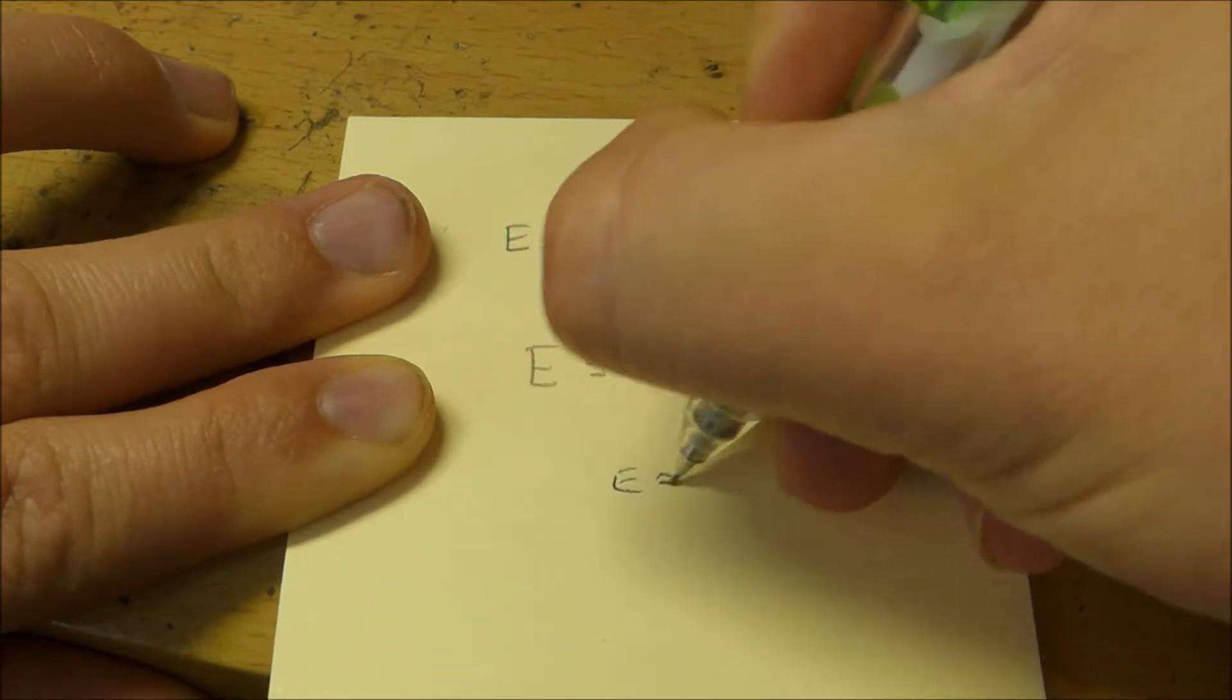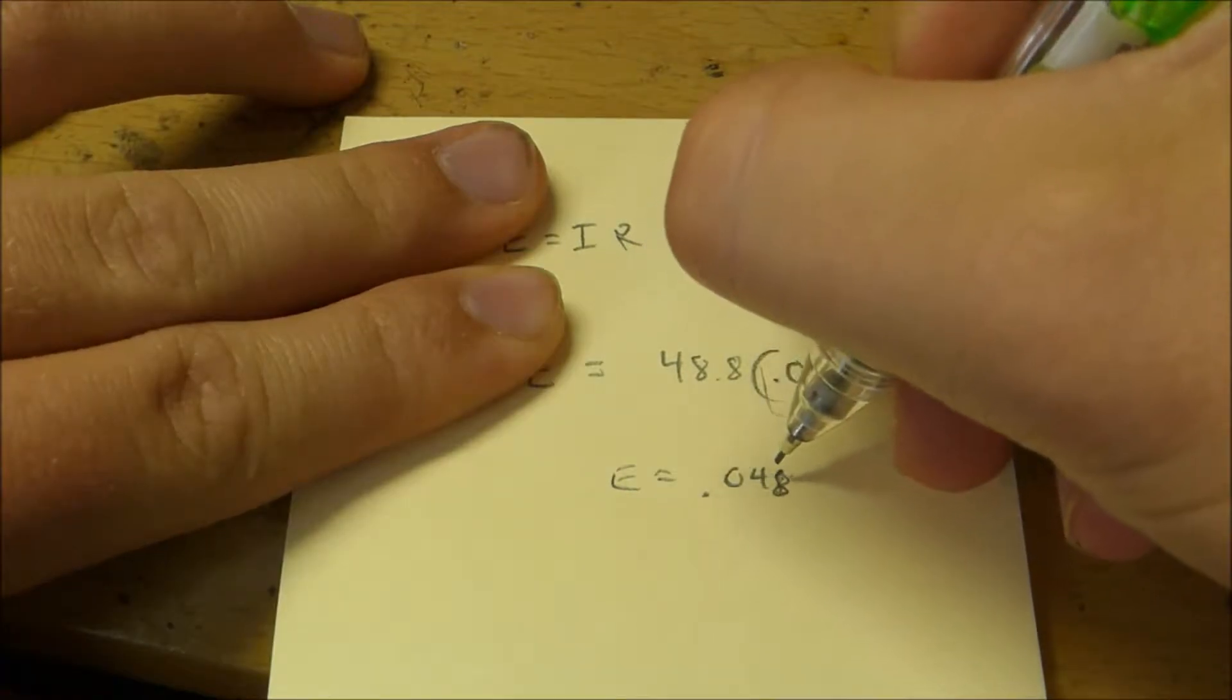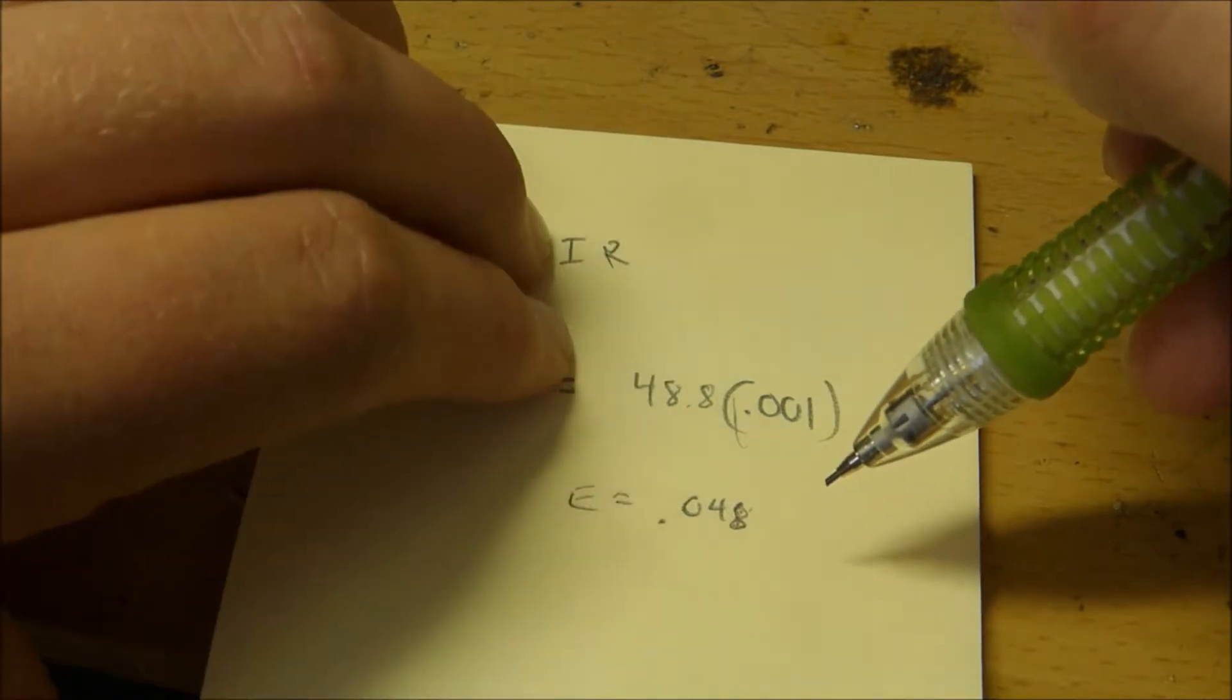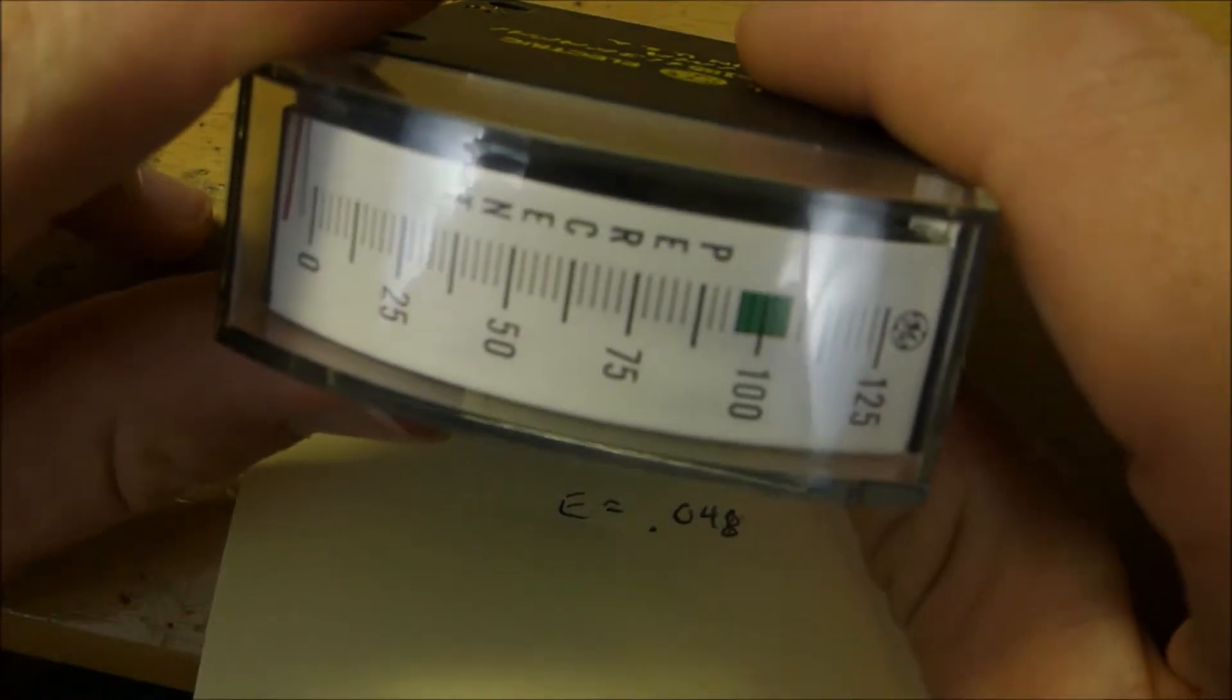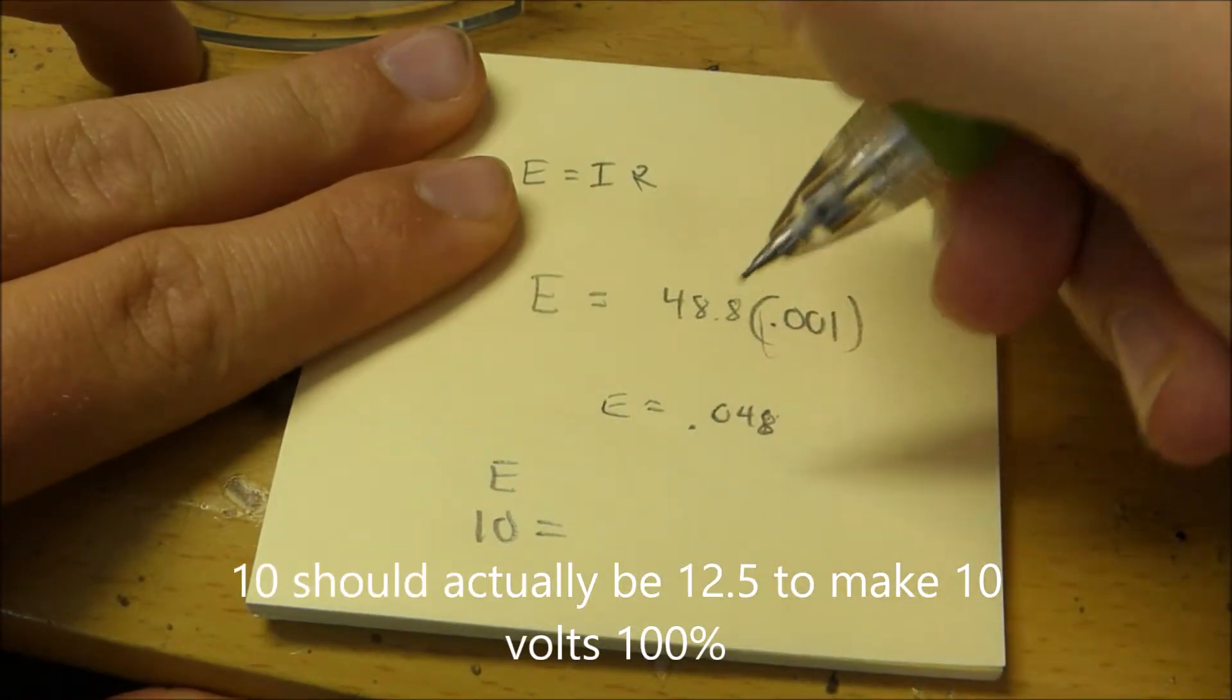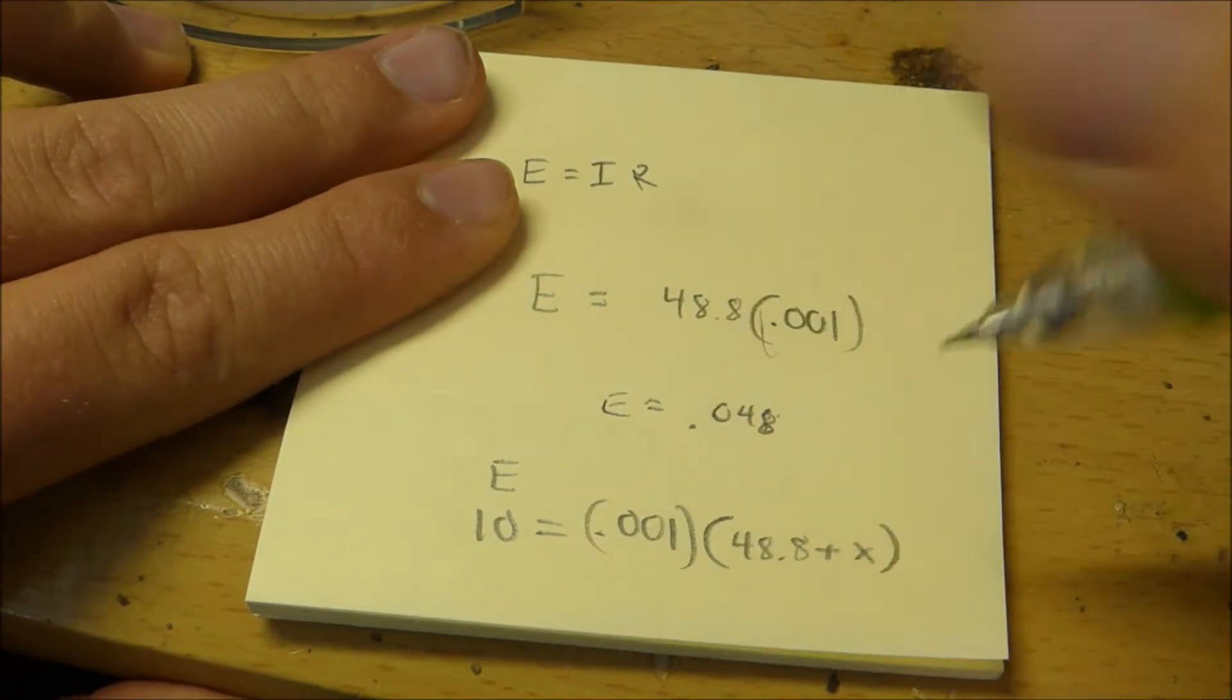So if we have 0.048 volts, this meter would be at maximum level. But no one's gonna have 0.048 volts when they want to use this. Let's say we wanted to put 10 volts to this coil and have a voltage between 0 and 10 volts correspond to a scale on here between 0 and 100%. To do that, we need to formulate a new equation where we have E which is 10, equal to 0.001 which is I, times R which is 48.8 plus X.